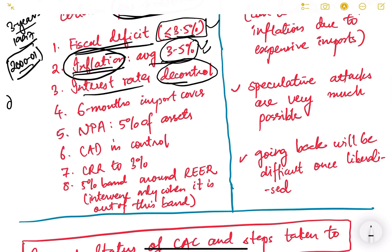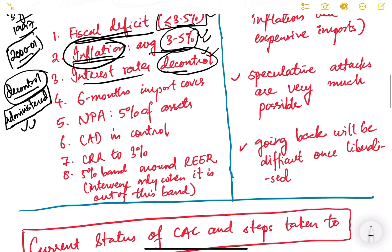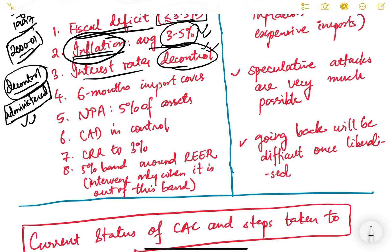The third precondition was decontrol of interest rates. Previously, RBI used to administer interest rates — dictating to banks what rates to apply on savings and loans. The committee said interest rates should not be controlled by policy but should be market-driven. This is what interest rate decontrol means.